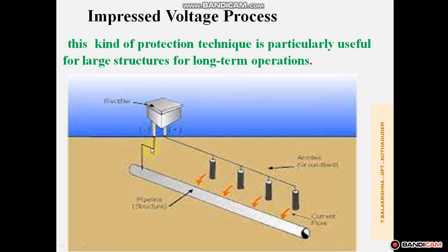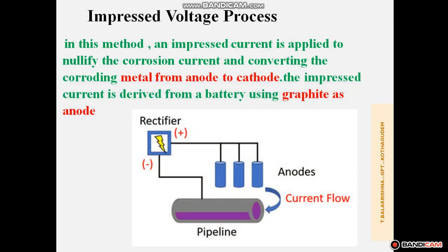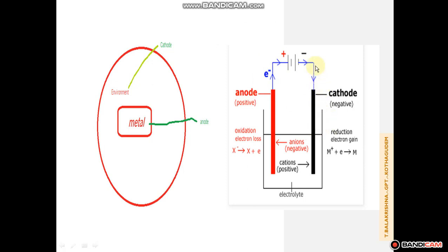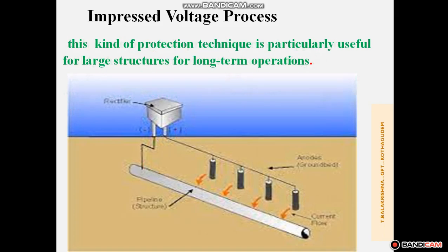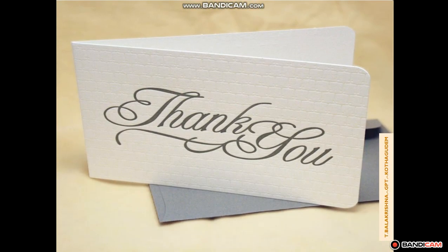The metal rod connected to the negative terminal of the battery acts as cathode naturally. When a metal interacts with the environment it acts as anode, so this metal is converted to cathode by connecting with power — that is called the impressed voltage process. Thank you students, this is Sri Balakrishna, chemistry lecturer at Kathapuram. Thank you very much.